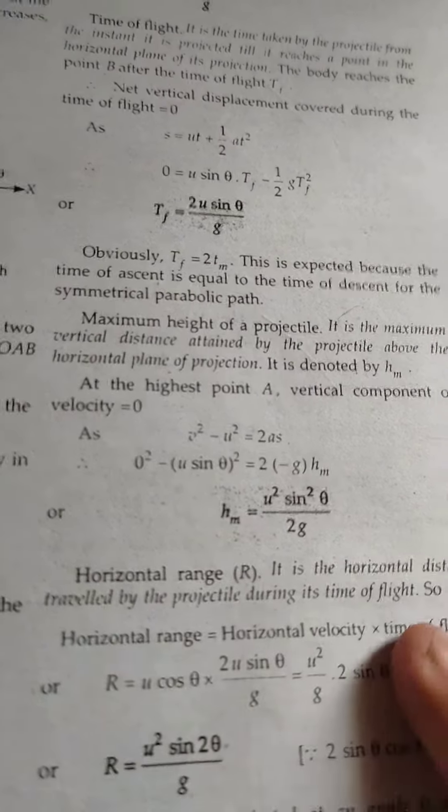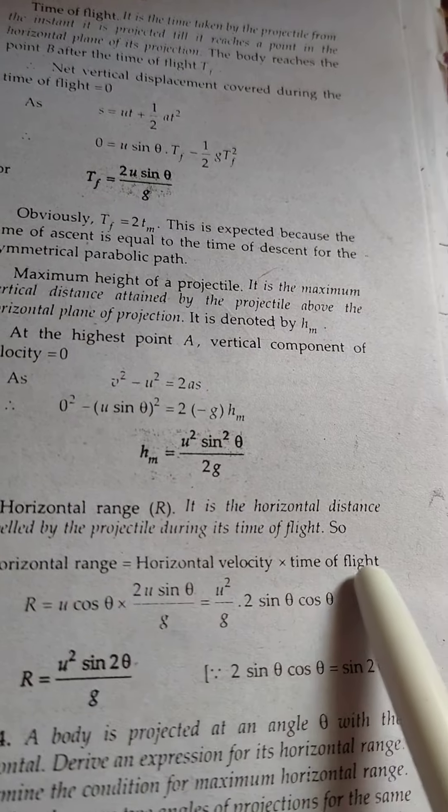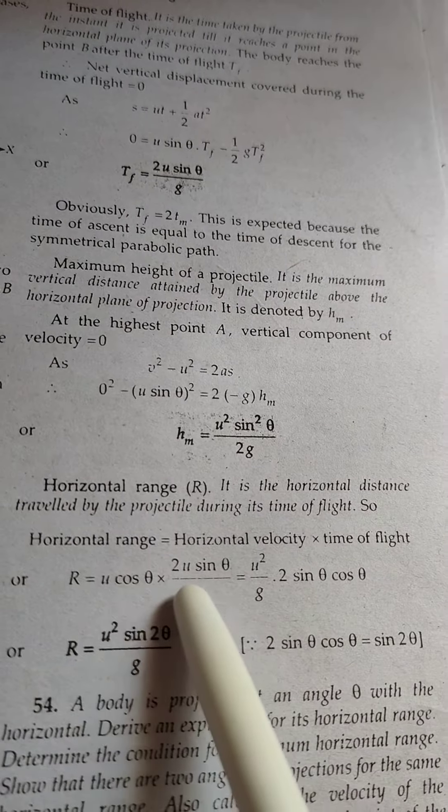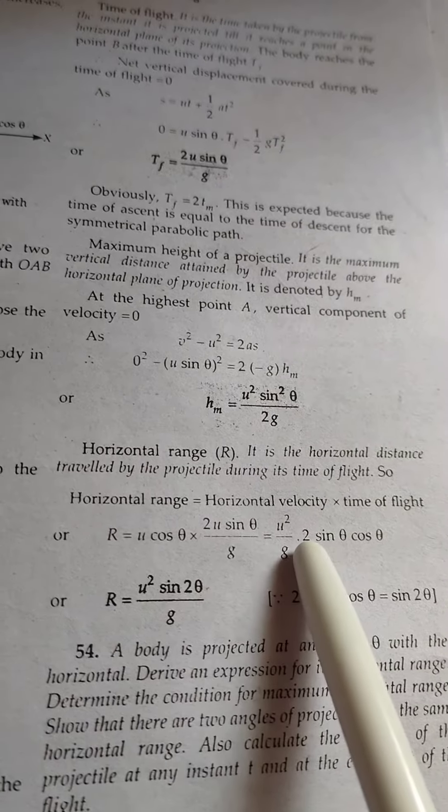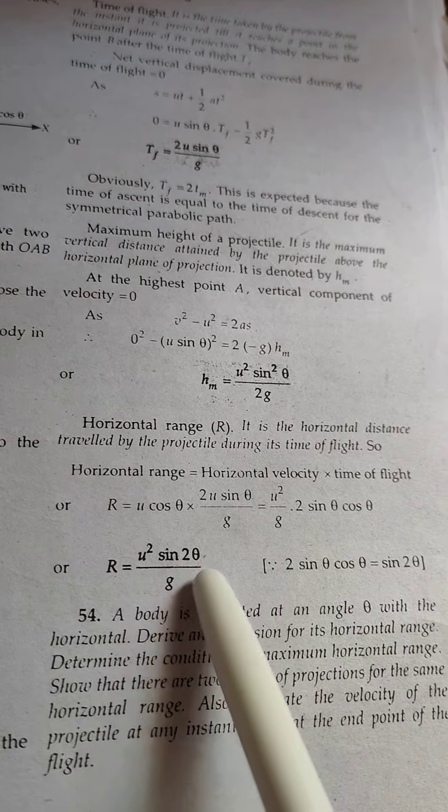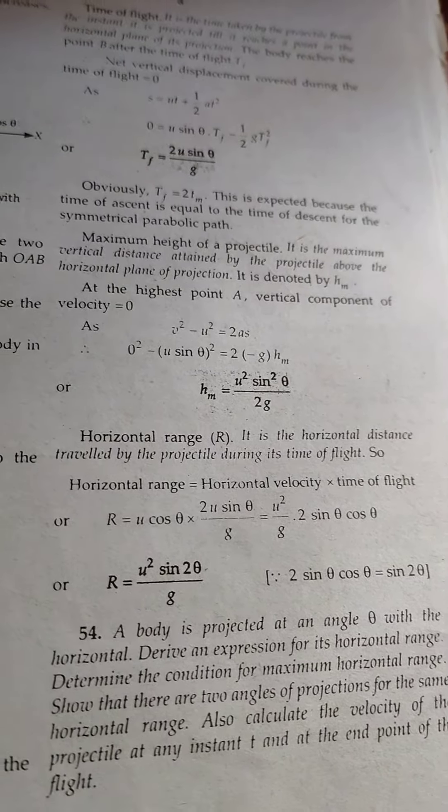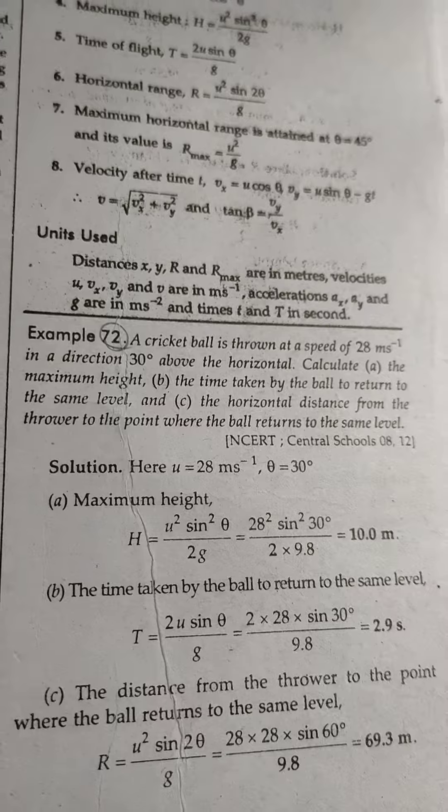Now horizontal range. It is the horizontal range traveled by projectile during its time of flight. So horizontal range is given by horizontal velocity multiplied by time of flight, so u cos θ multiplied by 2u sin θ / g. So it is u² / g times 2 sin θ cos θ, so it will be u² sin 2θ / g. So this is the range of the projectile.